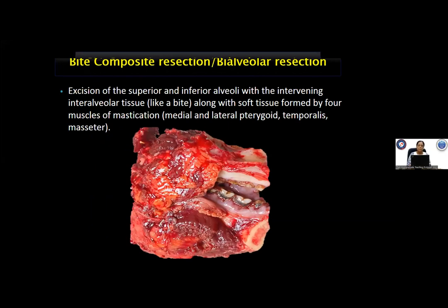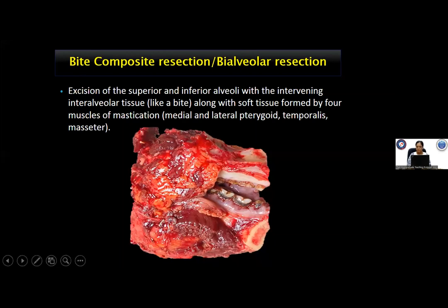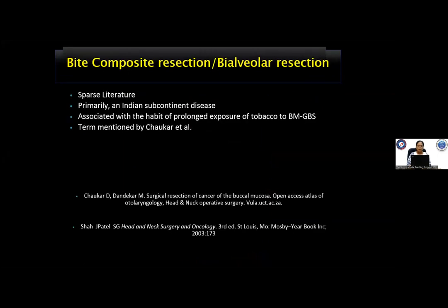A bite composite resection is the excision of the superior and inferior alveoli with the intervening inter-alveolar tissue — like a bite — along with the soft tissue formed by the four muscles of mastication. When I tried to look into the literature, there was hardly any data specifically about the bite composite resection. The lesions requiring it mainly involve the buccal mucosa, gingivo-buccal sulcus, and retromolar trigone area — primarily an Indian subcontinent disease associated with prolonged tobacco exposure. This term has been mentioned in the literature by Dr. Chowkar Itan.